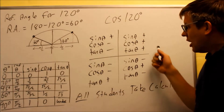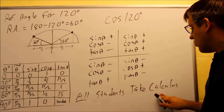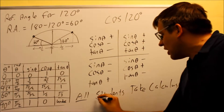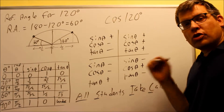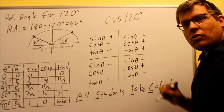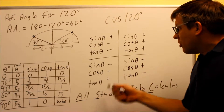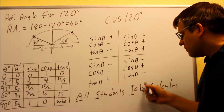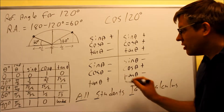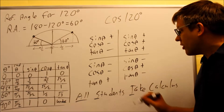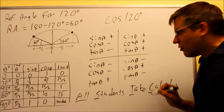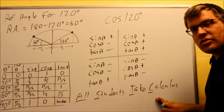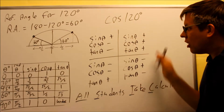All Students Take Calculus refers to quadrants 1, 2, 3, and 4 — each word represents each quadrant, and the beginning letter tells you which trig function is positive. 'All' means all of them are positive in the first quadrant. 'Students' is the second quadrant — S stands for sine, and sine is the only one positive there. In the third quadrant, T represents tangent — tangent is the only one positive. And finally in the fourth quadrant, C stands for cosine, so cosine is positive. That's a way to remember what's positive and what's negative.